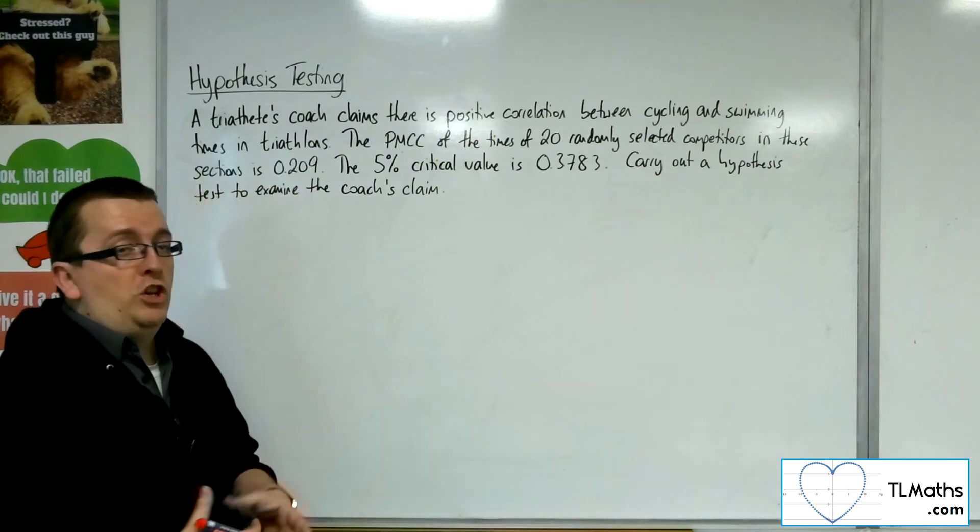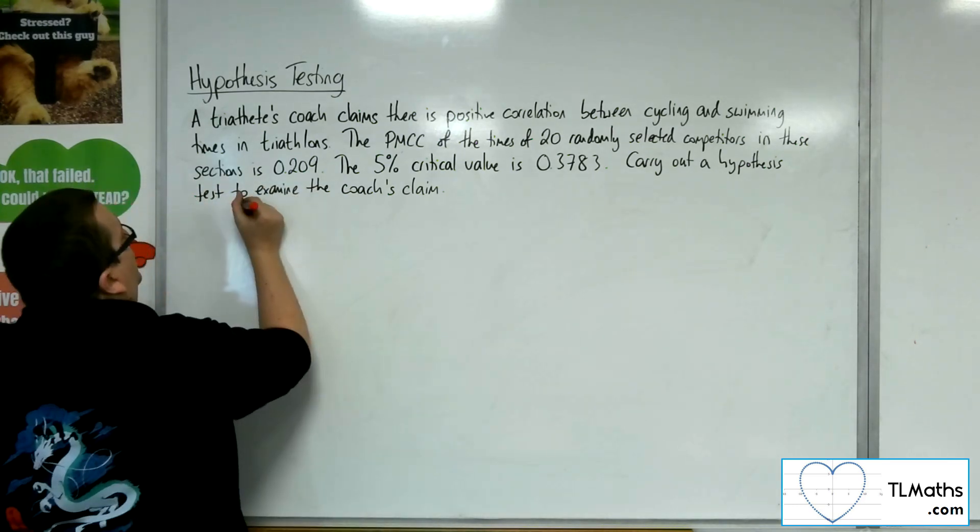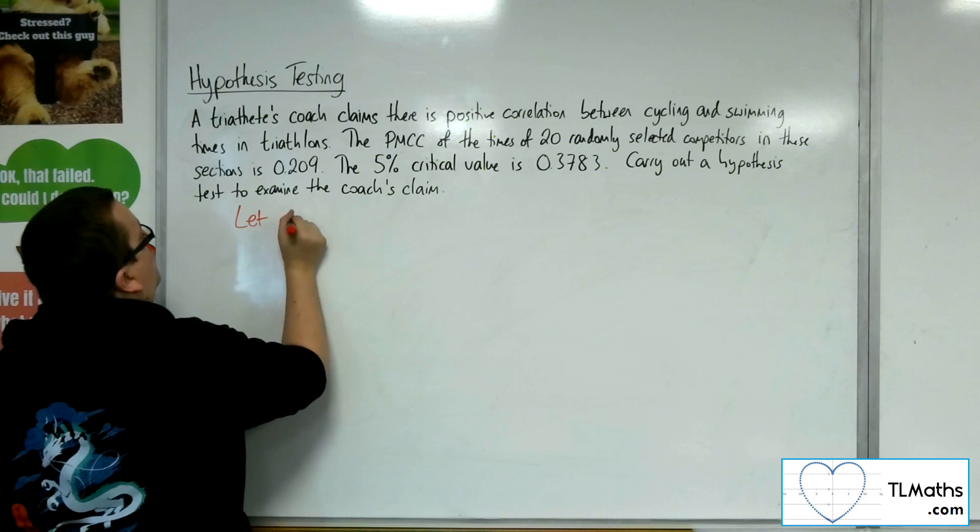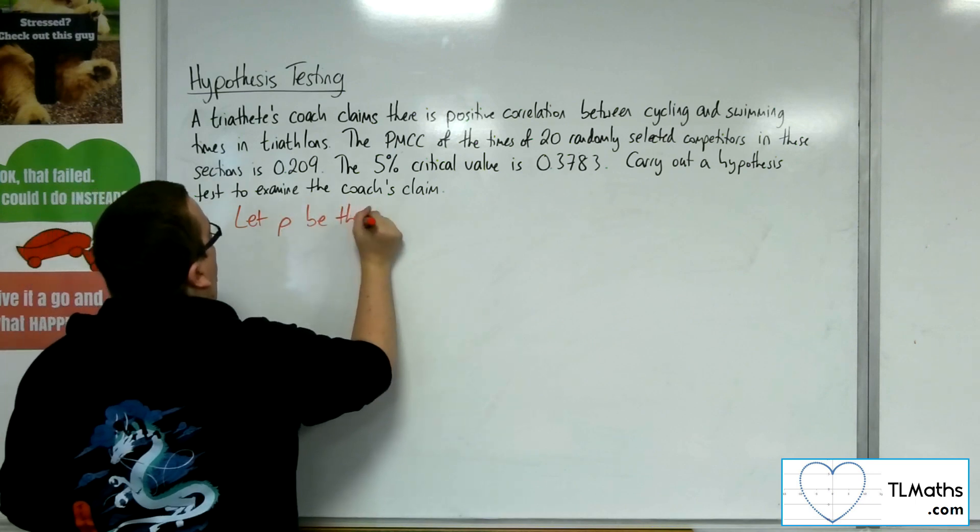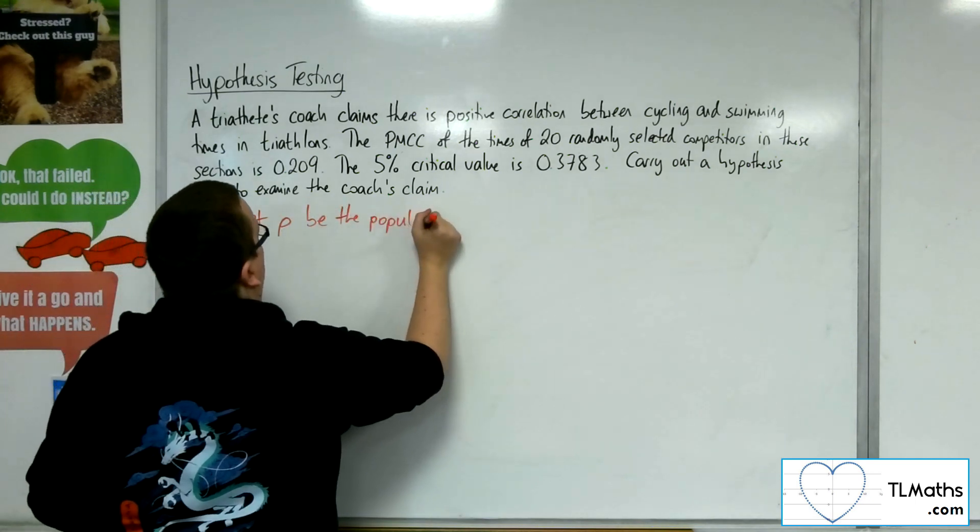Here is the structure that we need to make sure that we've written out. The initial sentence, let rho be the population correlation coefficient.